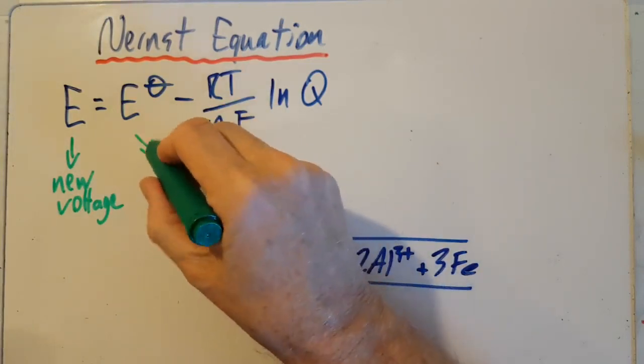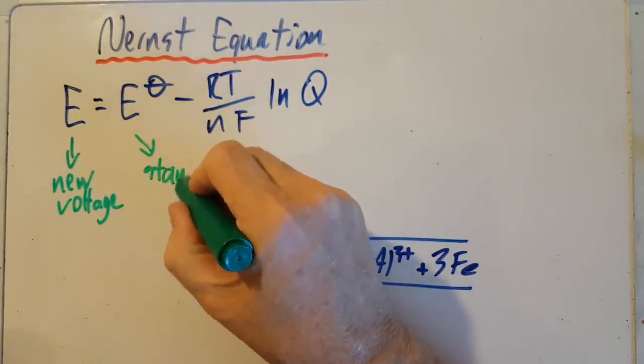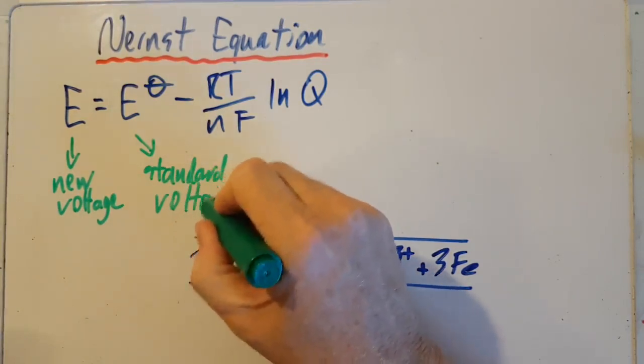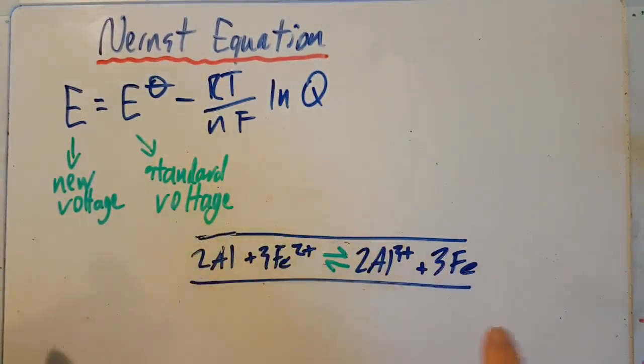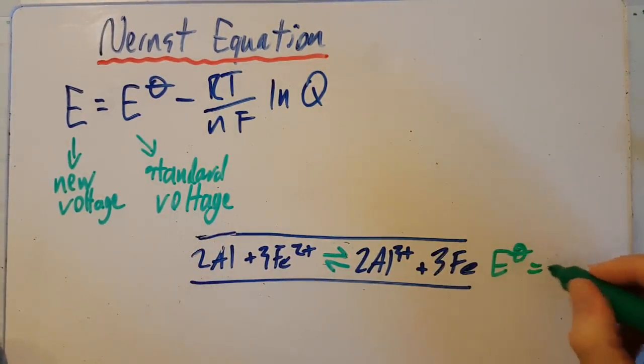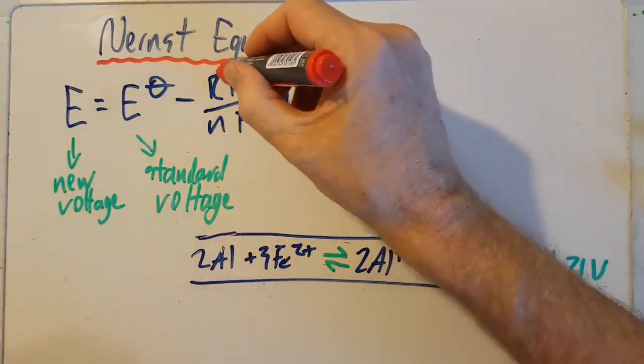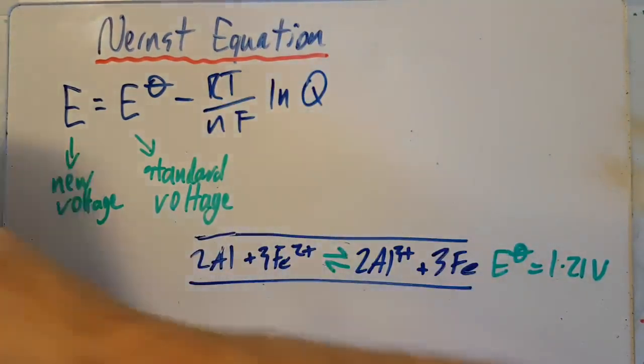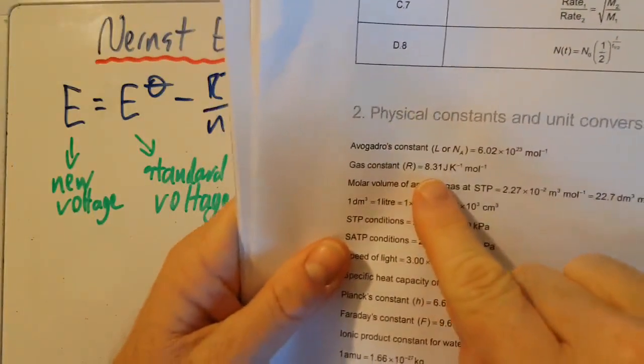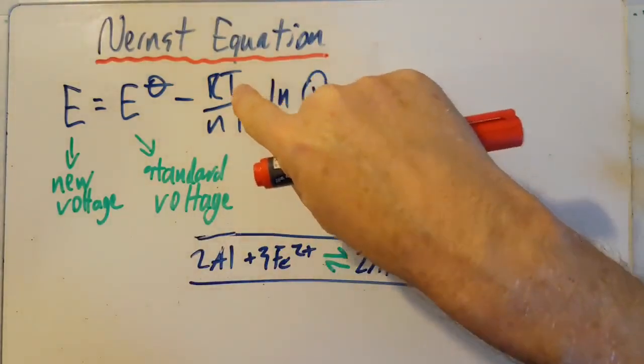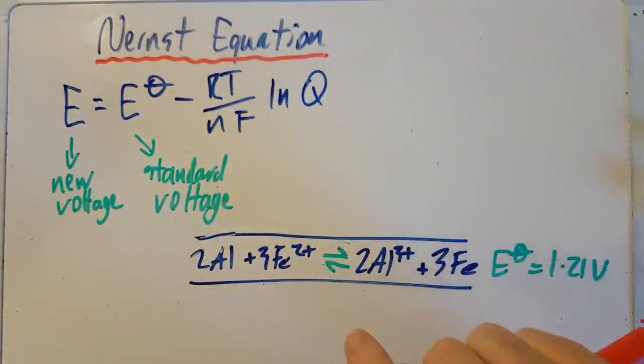All right. So E is the voltage for the new non-standard cell that you're creating. E theta, well, that's the standard voltage. In our case, the standard voltage E theta was 1.21 volts, which we calculated before. It's getting messy. R, that's the gas constant. That's OK. The gas constant is in the data booklet. T is the temperature. You've got to get that in Kelvin, otherwise you're going to have a problem. We might give it to you in degrees C, then you have to convert to Kelvin.